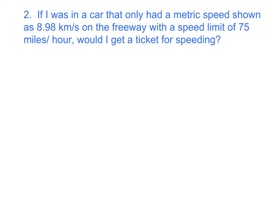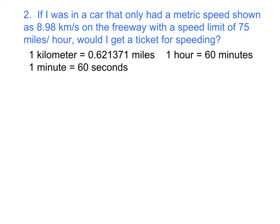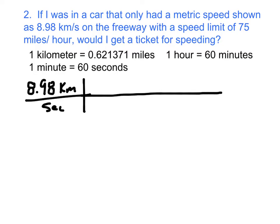Let's look at another problem where if I was in a car that had only a metric speed shown as 8.98 kilometers per second on the freeway with a speed limit of 75 miles per hour, would I get a ticket for speeding? So we're going to need to know some conversions. Here are some of the conversions that I would need to be able to do this conversion. The first thing that I want to do is set up the conversion with what I was given. I was given that I was going 8.98 kilometers per second. I want to use my factor label again. I look up here and I can work with one or the other. I'm going to take that conversion.